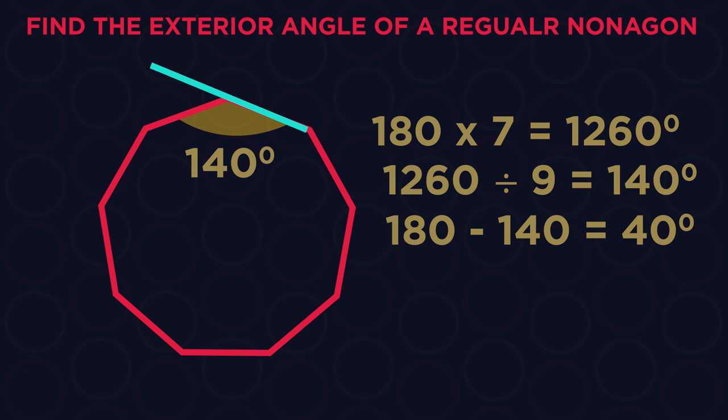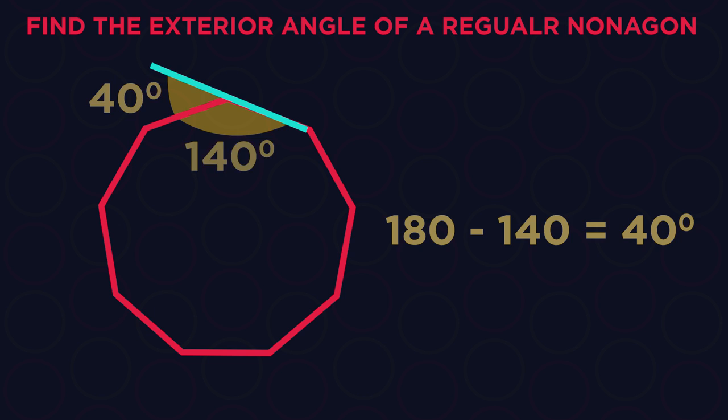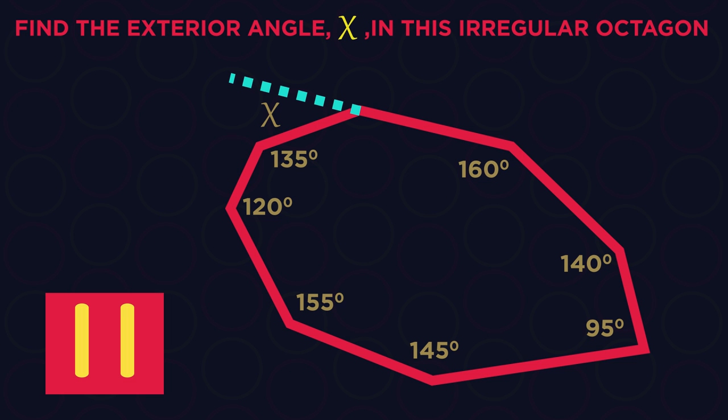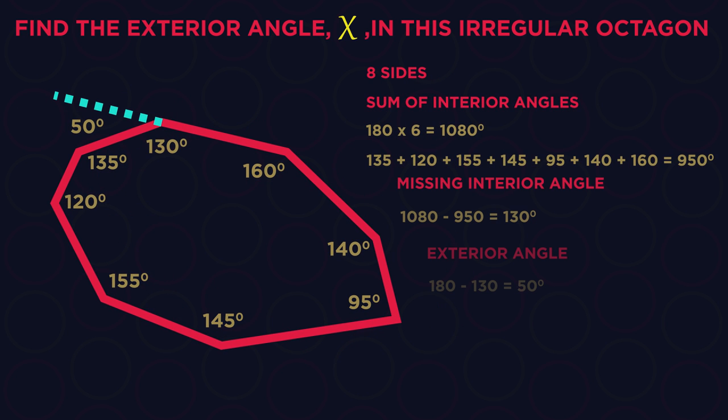180 take away 140 gives us the exterior angle of 40 degrees. Simple. Here's one for you to do. Pause the video, find the angle and click play when you're ready. Did you get it as 50 degrees?